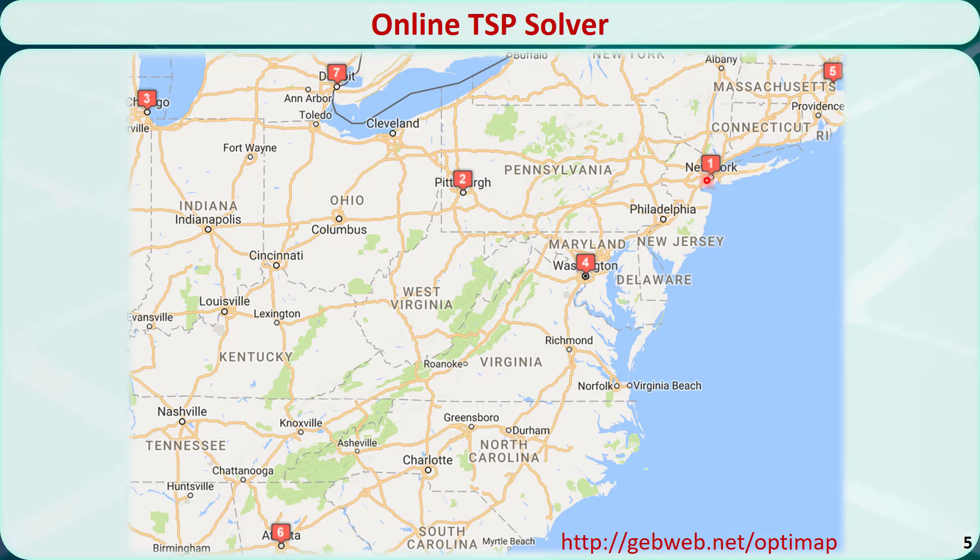For example, I'm trying to find the best tour for 7 cities: New York City, Pittsburgh, Chicago, Washington DC, Boston, Atlanta, and Detroit. The current order is obviously not optimal because it involves traveling back and forth from east to west and from north to south.